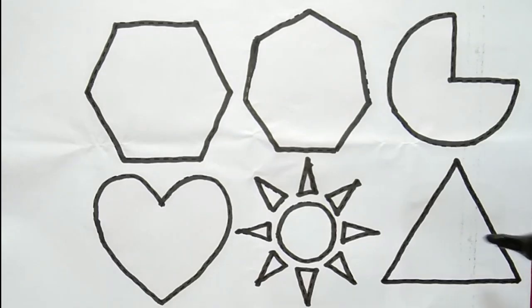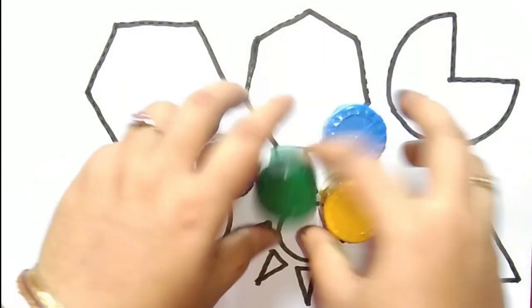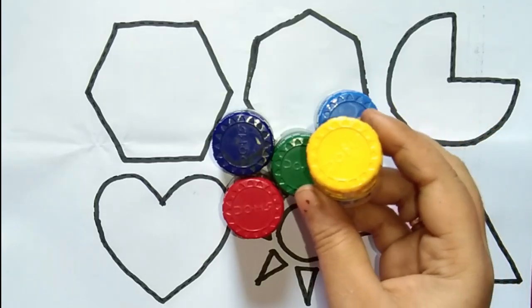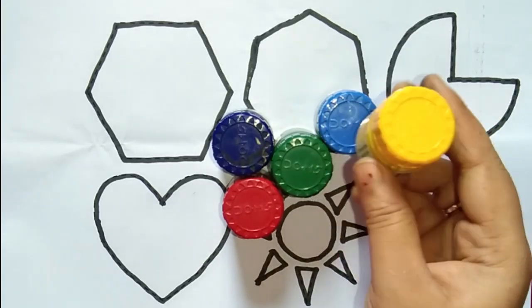And this is triangle. Let's learn two colors. This is yellow color. Which color is this? This is yellow color.